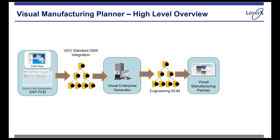Let's not forget about service BOMs and service kits — the same thing applies. From engineering you can pull the kit information from your engineered parts and add it into your manufacturing kit or your service kit. Additionally, the tool also provides the ability to add consumables or non-engineered design information — items not in CAD, such as grease, paint, etc. That information can also be added, managed, and manipulated with the Visual Manufacturing Planner.